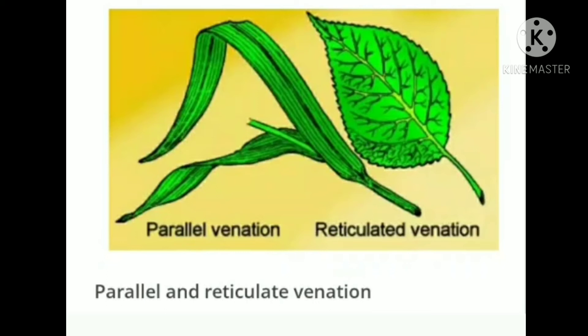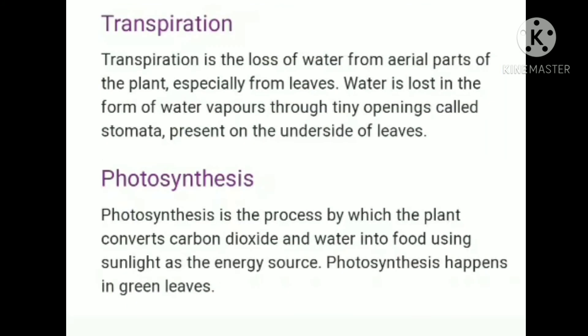Find out for yourself what parallel venation and reticulate venation look like. Leaves have two processes: photosynthesis and transpiration. Transpiration is the loss of water from aerial parts of the plant, especially from leaves. Water is lost in the form of water vapors through tiny openings called stomata, present on the underside of leaves. This process is called transpiration, and plants release a lot of water into the air through it.